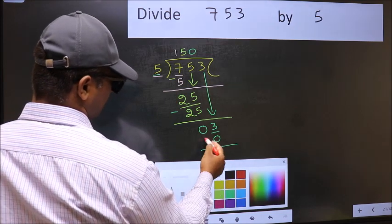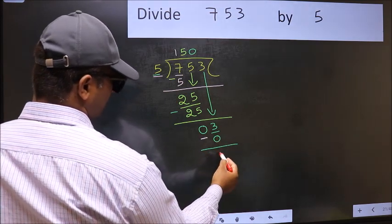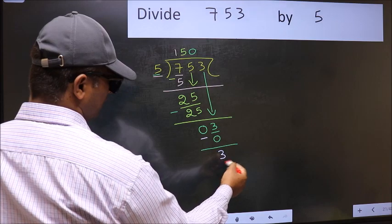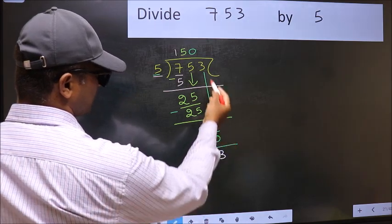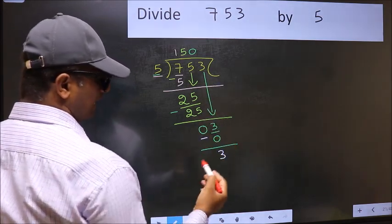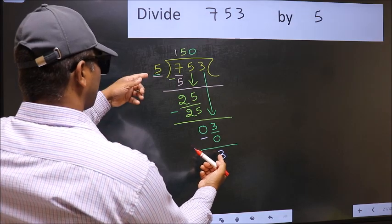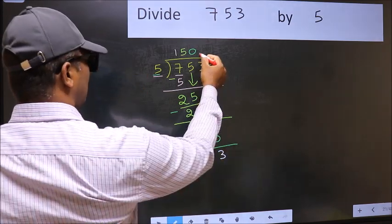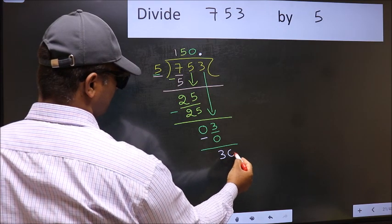Now you should subtract. 3 minus 0, 3. Over here, we did not bring any number down. And 3 is smaller than 5, so now you can put dot and take 0.